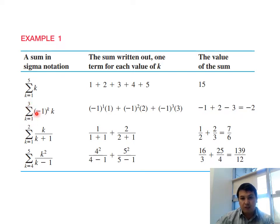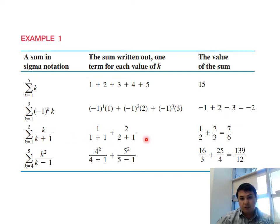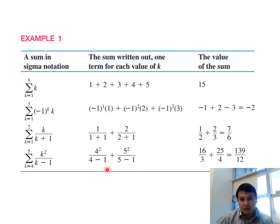In the second example, k runs from 1 to 3, giving three terms: (-1)^1 · 1 + (-1)^2 · 2 + (-1)^3 · 3, which sums to -2. The third example has k from 1 to 2, giving k/(k+1), which is 1/2 plus 2/3 = 7/6. Another example has k running from 4 to 5 — only two terms — giving 139/12.